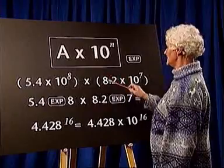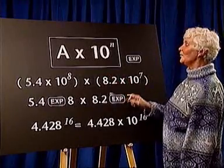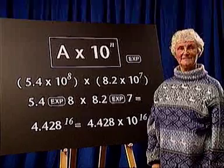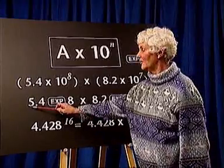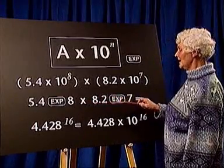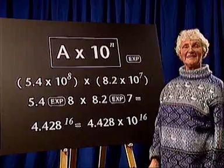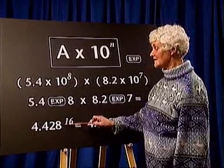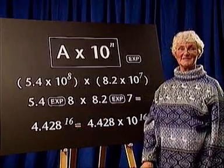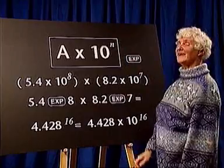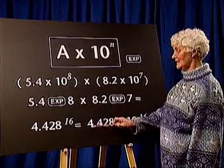In our final example, we will multiply two numbers which are already in standard form. One of the easiest ways to solve this is to use the EXP button on your calculator. To find the solution, key in 5.4 EXP 8 times 8.2 EXP 7 equals. The answer will appear on the screen as 4.428, with 16 in a different form from the other digits. You must remember that 16 is the power of 10. The answer in standard form must be written as 4.428 times 10 to the power of 16.